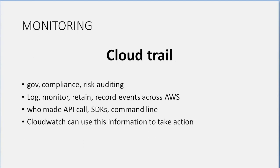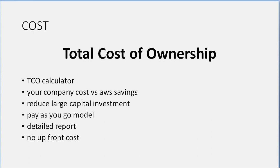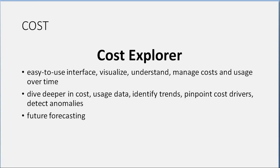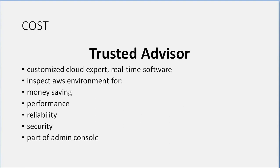Cost tools: The TCO Calculator compares your company's costs versus AWS savings, reducing large capital investment with a pay-as-you-go model and detailed reports with no upfront cost. Cost Explorer provides an easy-to-use interface to visualize, understand, and manage costs and usage over time, dive deeper into cost and usage data, identify trends, pinpoint cost drivers, detect anomalies, and do future forecasting.